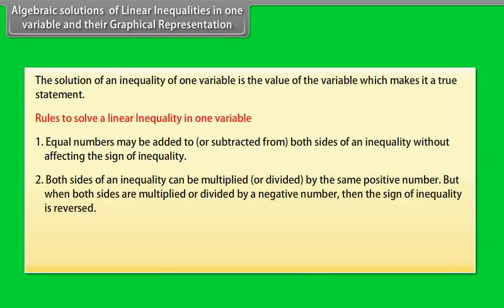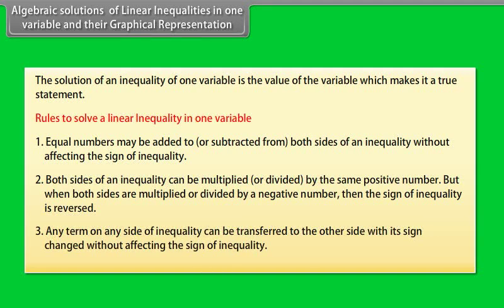Rule 2: Both sides of an inequality can be multiplied or divided by the same positive number. But when both sides are multiplied or divided by a negative number, then the sign of inequality is reversed. Rule 3: Any term on any side of an inequality can be transferred to the other side with its sign changed without affecting the sign of inequality.